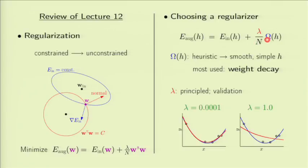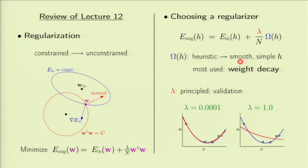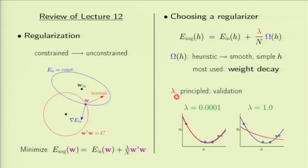There are two choices: the regularizer omega — with weight decay, elimination, or other forms — and lambda, the regularization parameter controlling the amount of regularization. The choice of omega in practice is really a heuristic choice guided by theory and certain goals. There is no purely mathematical way to derive a totally principled omega, but we follow guidelines and do quite well. We make a choice of omega toward smoother or simpler hypotheses, and leave the amount of regularization to lambda. Lambda is a bit more principled — we determine it using validation, which is today's subject.